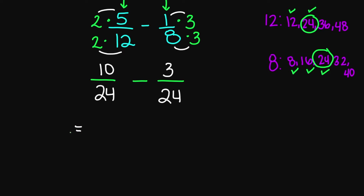Now that my denominators are the same, I'm going to subtract my numerators. 10 minus 3 is going to give us 7, over 24. And this is your final answer.